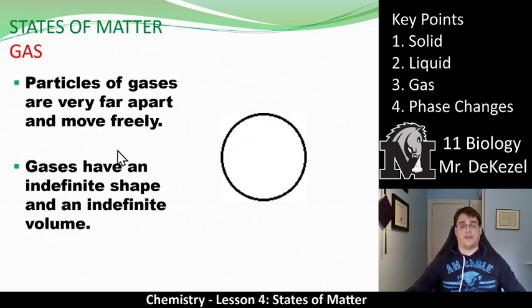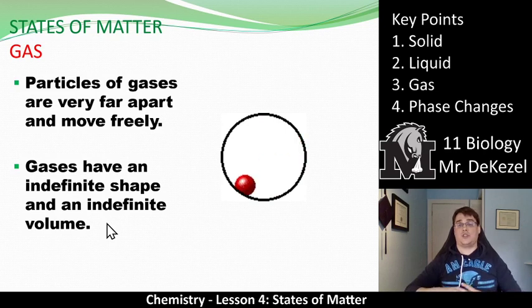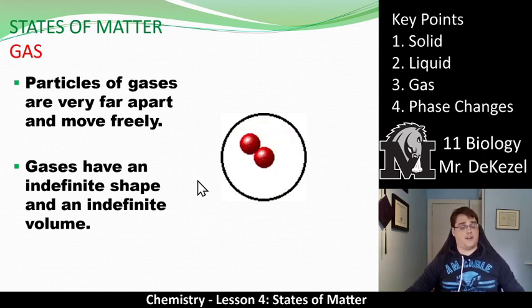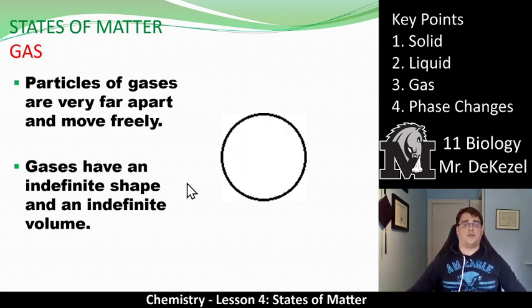We're going to move on to gas, which is key point three. So the particles of gases are very far apart, and they move freely. So you can see that the gas particles are moving around here. They just bump into each other every once in a while. There's almost none here a lot of the time. That is what a gas would look like. There's a lot of space between them. So we say gases have an indefinite shape and indefinite volume. So if you were to release a gas, it would go everywhere, and the volume is able to expand. Like if you were to release a gas in a room, it would just expand and expand and expand. We've all farted before. I hope that makes sense. If anyone has any questions about a solid, liquid, or gas, we can definitely talk about that.